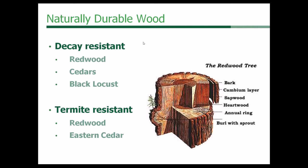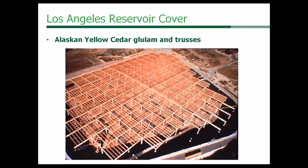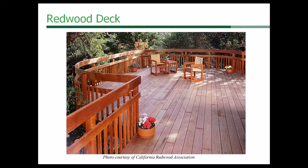The code has specific language for decay-resistant naturally durable materials like redwoods, cedars, and black locusts, and termite-resistant species like redwoods and eastern cedars. Those are used in sensitive applications. This example shows a drinking water reservoir in Los Angeles that used Alaskan yellow cedar glulam and trusses for all the structural wood products, so there's no need to worry about any preservatives. Those are obviously suitable for structural applications as well. Redwood is used a lot in outdoor exposed applications, especially out west.